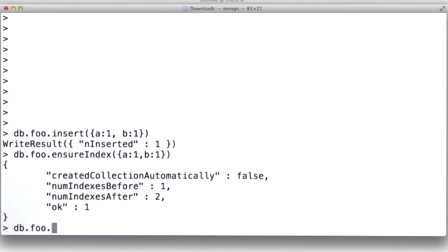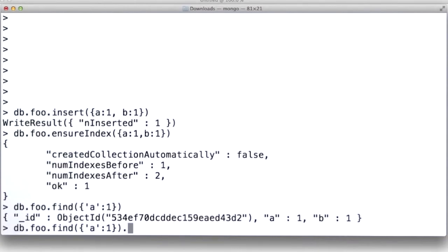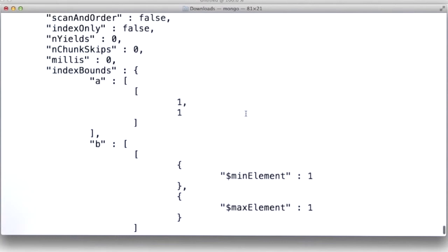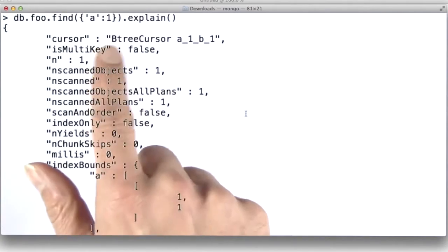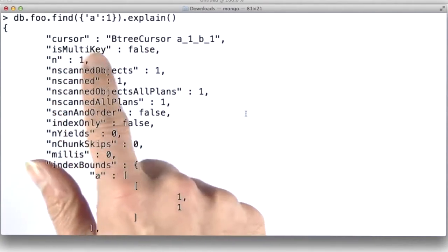Let's now do a query to find a result and find something where A is 1. All right. It found that document. Now let's do an explain and see what explain says about what index it used. And it said it used this btree cursor index, and it said multi-key is false.